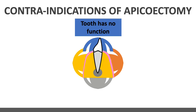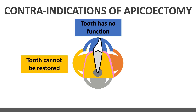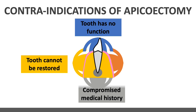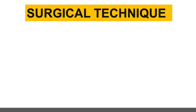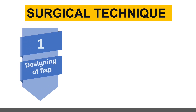Contraindications of apicectomy: first, the tooth has no function — meaning it has no antagonist and is isolated with no importance as a bridge or pillar for fixed prosthesis. Second, a tooth that cannot be restored, a periodontally compromised tooth, or a tooth with a vertical root fracture — extraction is preferred. Other contraindications include compromised medical history and an uncooperative patient.